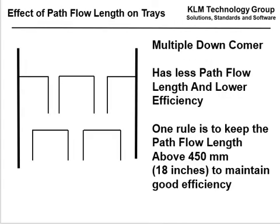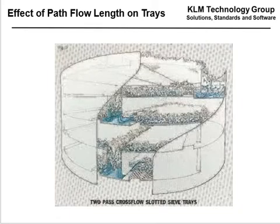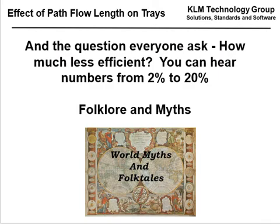Regarding flow path length across the trays: a multiple downcomer tray has less path flow length and lower efficiency. One rule is to try to keep the path flow length above 450 millimeters, which is 18 inches, to maintain good efficiency — as the path flow length goes down, the efficiency goes down. The question everybody asks is how much less efficient is a multiple downcomer tray. You can hear numbers from 2% to 20%. A multiple downcomer tray salesman told me they were 2% different; a cross-flowing tray salesman told me they were 20% different — folklore and myth.